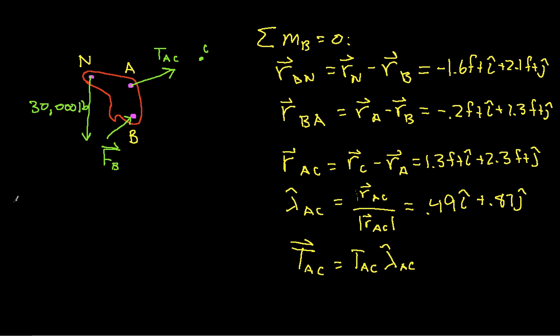And so I can now say that the moment about point B will be given by R_BN cross F_N, and F_N is this guy, plus R_BA cross T_AC. And this is equal to the sum of the moments at B, so this has to be equal to zero.